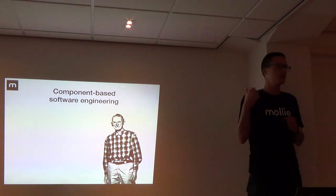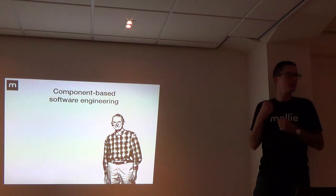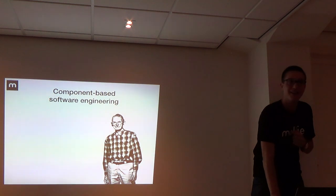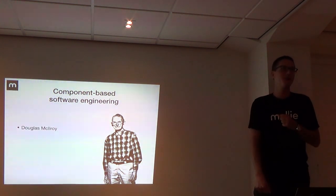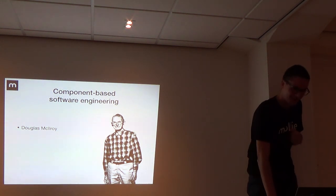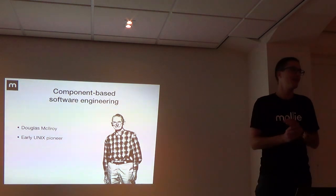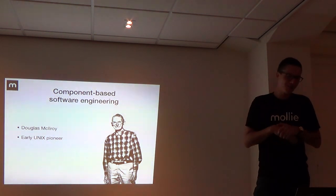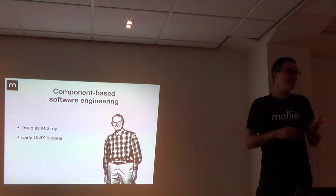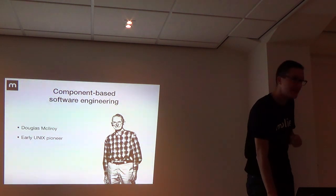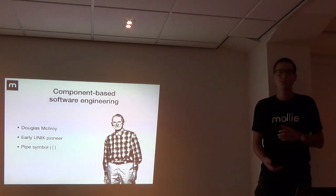Who knows who this guy is? It's Douglas McElroy - does that name ring a bell? It was actually an early Unix pioneer from the seventies. He is the inventor of the pipe symbol in Unix. He made it possible to build things in a component-based way. For example, you can have one command and pipe the result of that command into another command - like listing a folder and filtering by name.